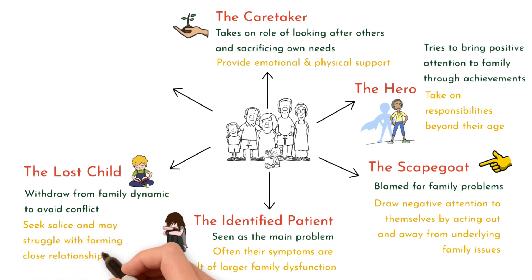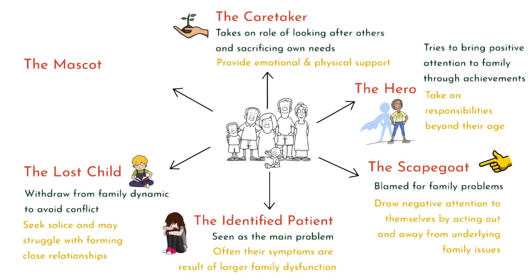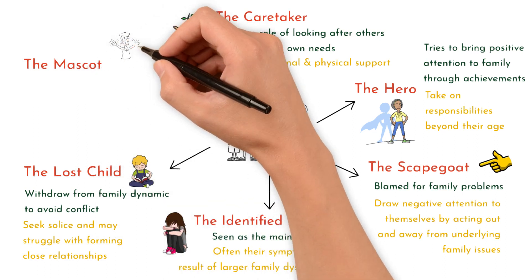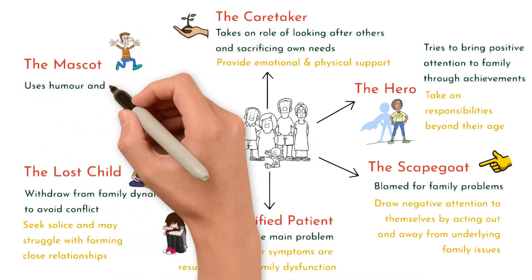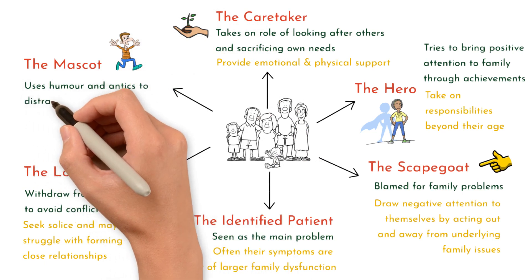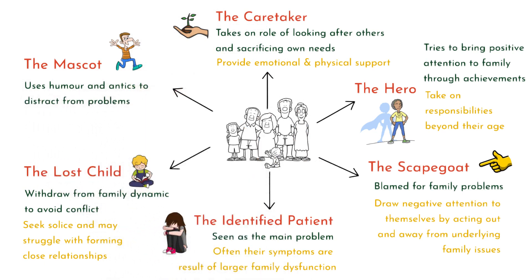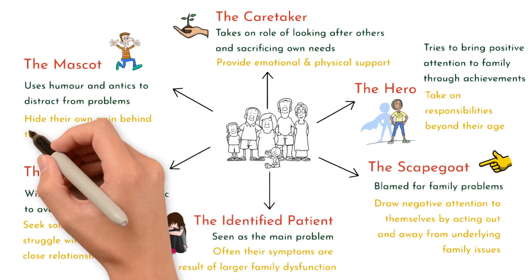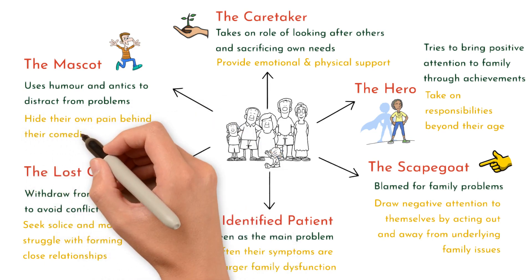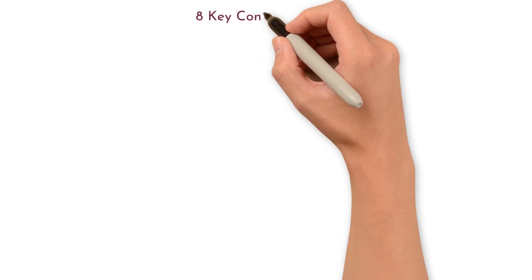6. The mascot, or clown. This individual uses humour and antics to lighten the mood and distract from the family's problems. They often hide their own pain behind their comedic behaviour. There are also several key concepts in Family Systems Theory that are useful to understand.